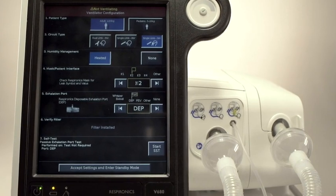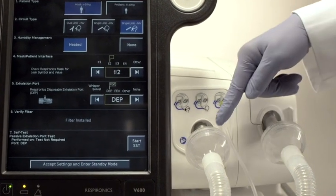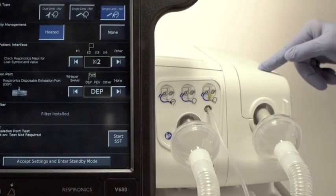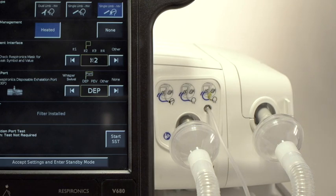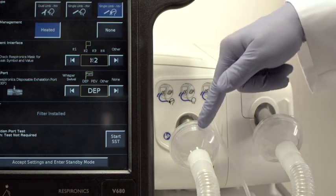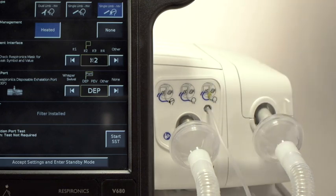First, attach the dual-limb circuit and ensure the ESIS cartridge is installed, seated, and covered. Ensure you have filters on the inspiratory outlet port and the ESIS port. This helps to reduce possible contamination to the ESIS cartridge.